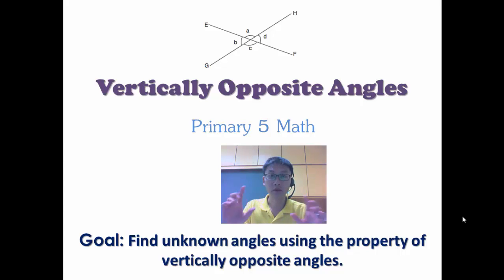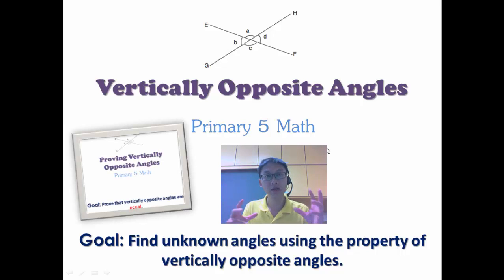I'm not going to prove that vertically opposite angles are equal. This is something you've already proven. But if you want to see how it's being proven, I can prove vertically opposite angles using angles on a straight line. If you want to see how I do that, click on the link here and I will show you how.